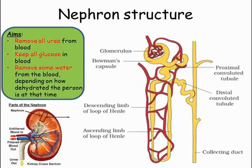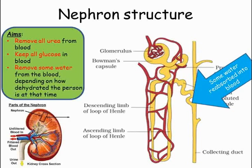The nephron then empties into a collecting duct, which in turn empties into the urethra, carrying the urine to the bladder. As it passes through the collecting duct, some more water is reabsorbed back into the blood.